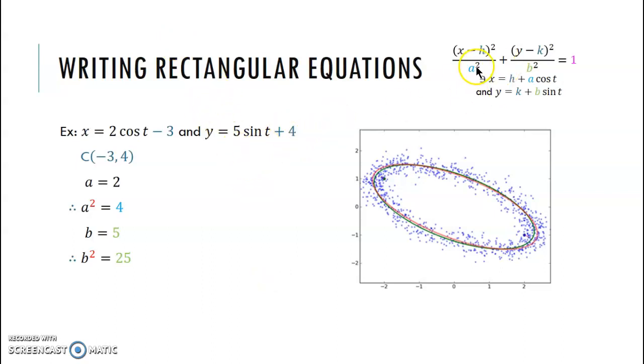So just a reminder here, we have our rectangular equation for ellipses: x minus h squared over a squared plus y minus k squared over b squared is equal to one. And to get our parametric equations, we have x is equal to h plus a cosine of t and y is equal to k plus b sine of t.